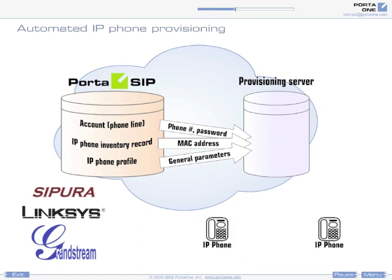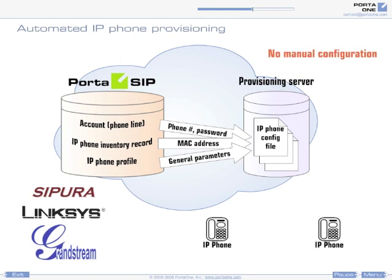A configuration file will be created by PortaSwitch for each device. This file contains all the vital service parameters such as phone number and password, enabled call features, preferred codecs, and other data. Thus, no manual configuration is required on the IP phone side.